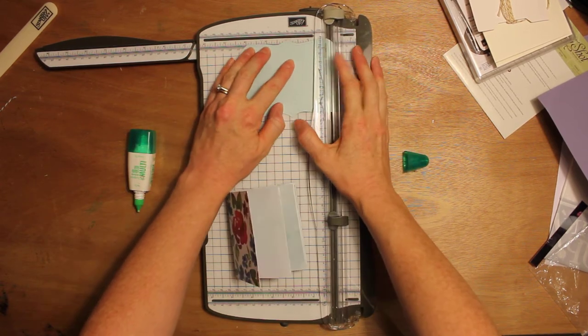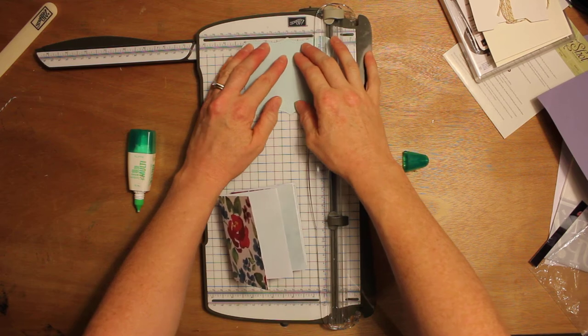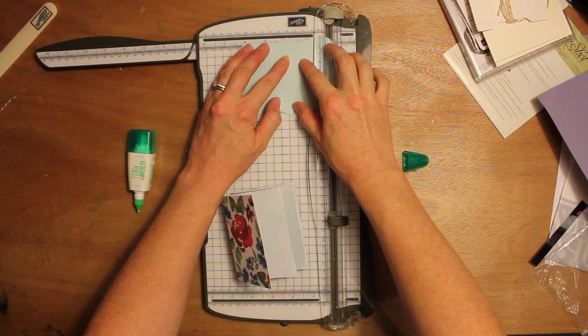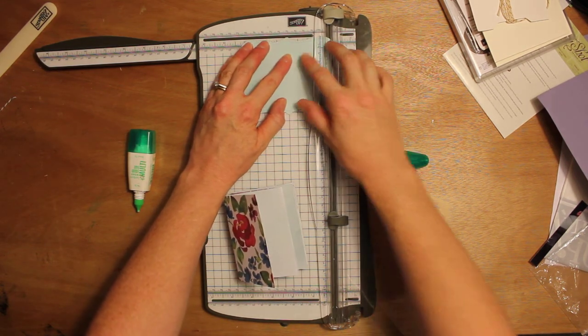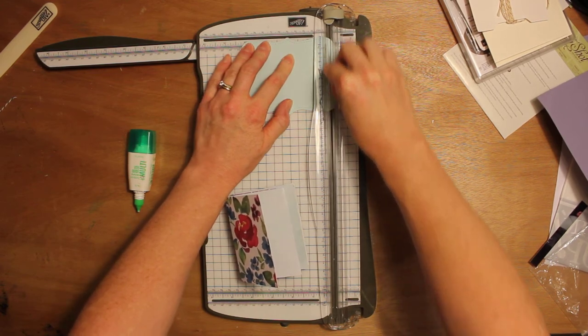Now you just need to score it down to four inches wide. So put your points at two inches and trim that end off.